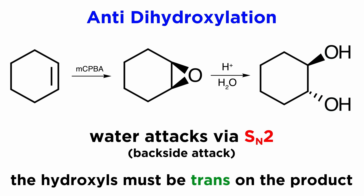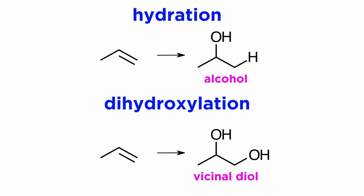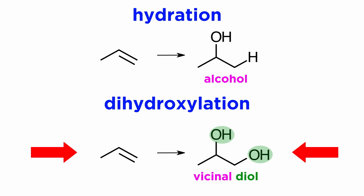So epoxidation is simply the first step of the dihydroxylation. As we can see, with dihydroxylation it is very easy to tell what is happening by the name of the reaction. We are adding two hydroxyl groups, one to each carbon in the pi bond. This means that whereas a hydration will yield an alcohol, a dihydroxylation will yield a vicinal diol. Here, diol means that there are two hydroxyl groups, and vicinal means that they are specifically on adjacent carbons.